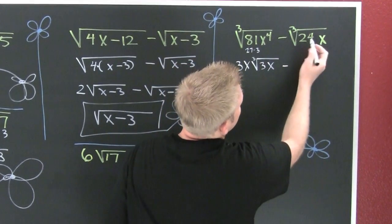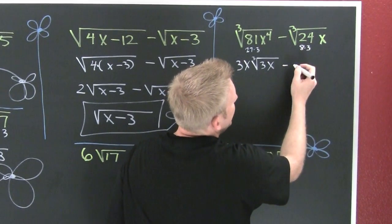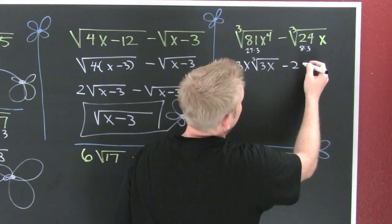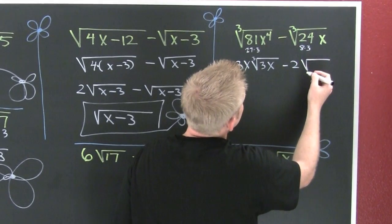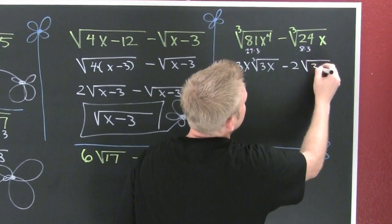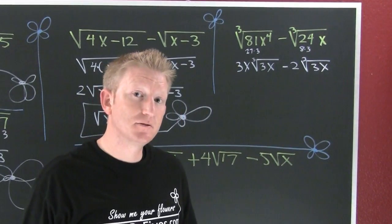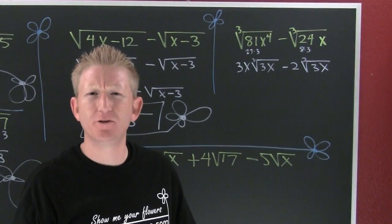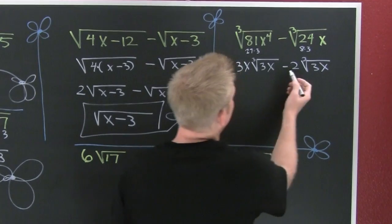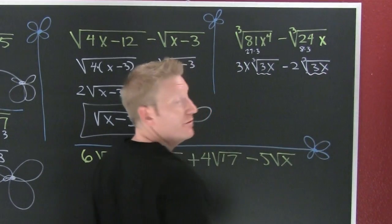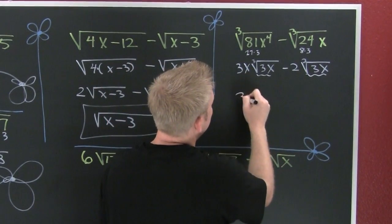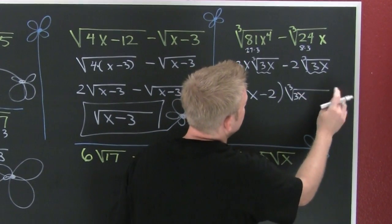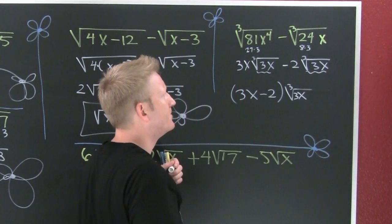Now I subtract off the next term. This is eight times three, and the cube root of eight is two, so two comes out. On the inside I have three x underneath that third root. Now do I have like radicals? I do! So I add the outside numbers: three x minus two, times the third root of three x.